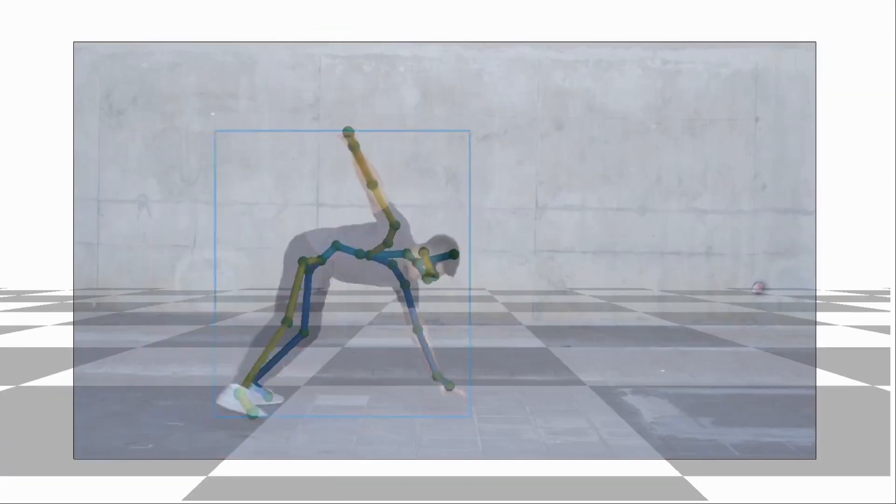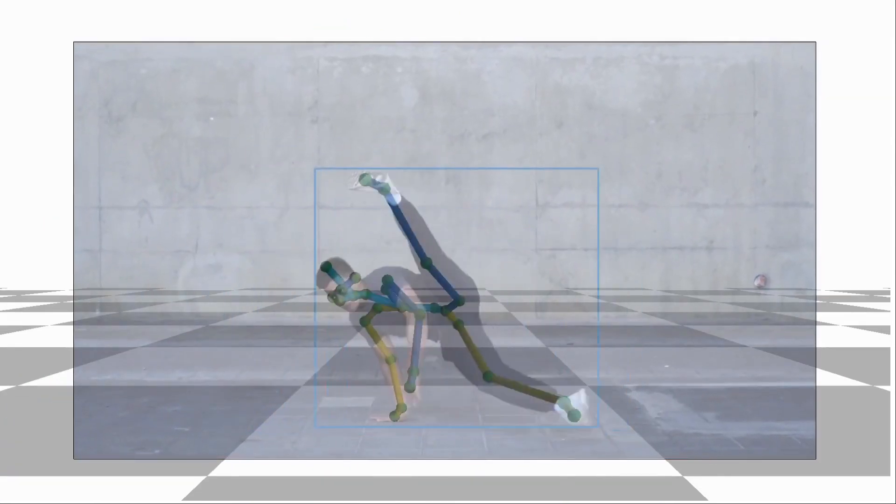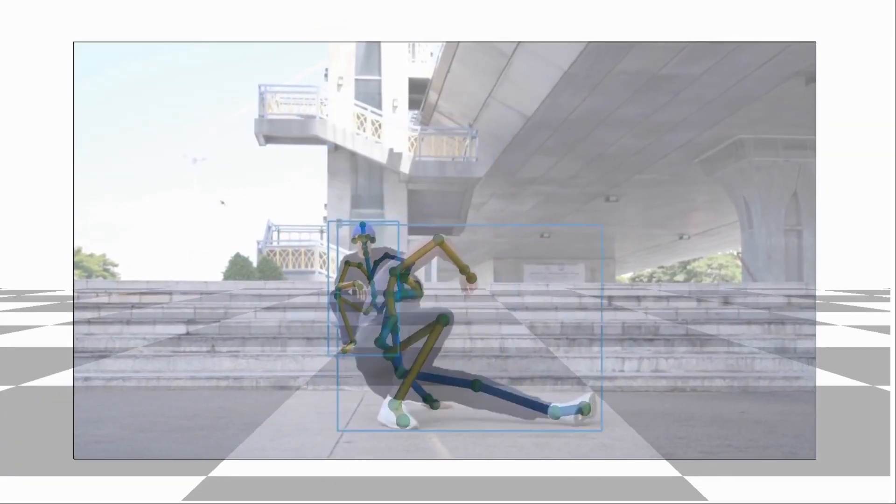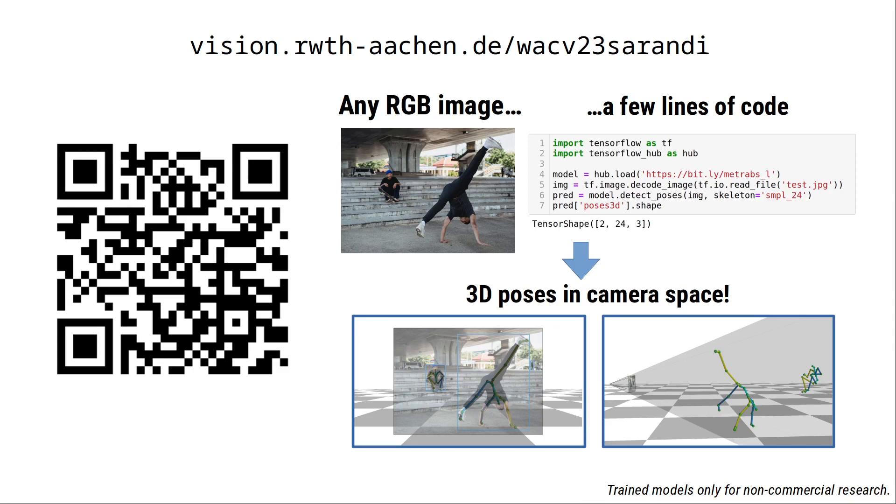Qualitative results in the wild are very good too, even on very challenging poses. We believe our models can be useful for many downstream research applications that currently only use 2D poses out of convenience. We therefore make our models easy to use with minimum dependencies and an intuitive, multi-person aware API.